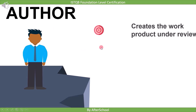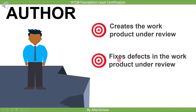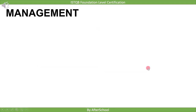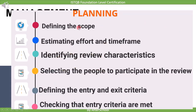The author creates the work product under review — in the requirement stage, the person who wrote the requirement is the author; in the implementation stage, the person who writes the code is the author. The author also fixes defects found in their module, since they already know the work product best and it is more efficient for them to fix defects found in it.